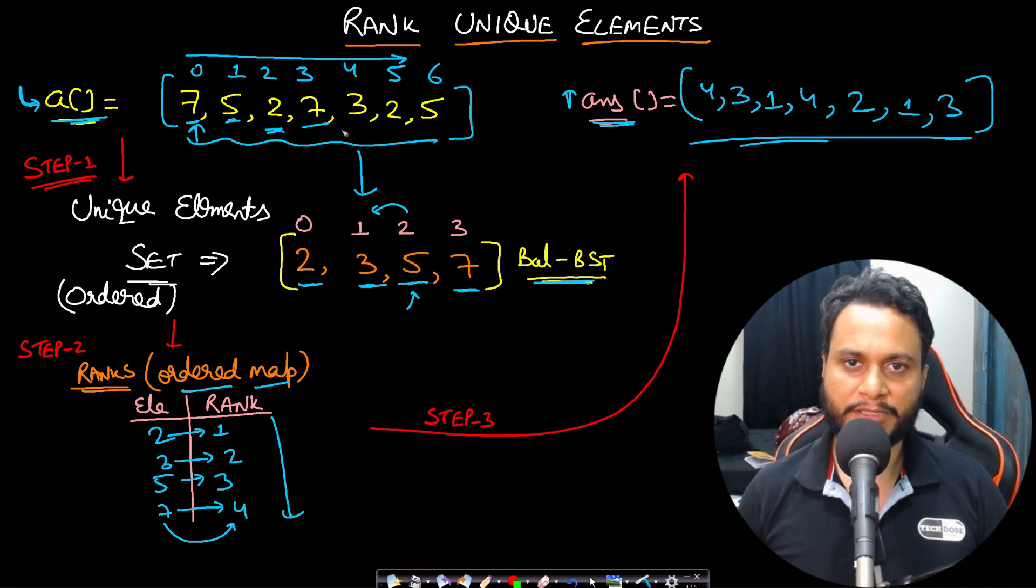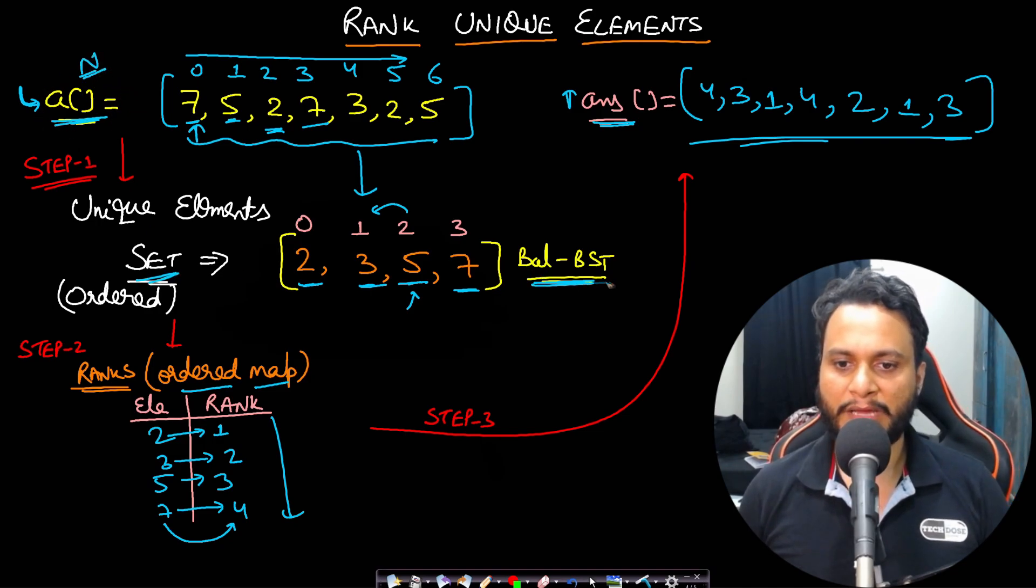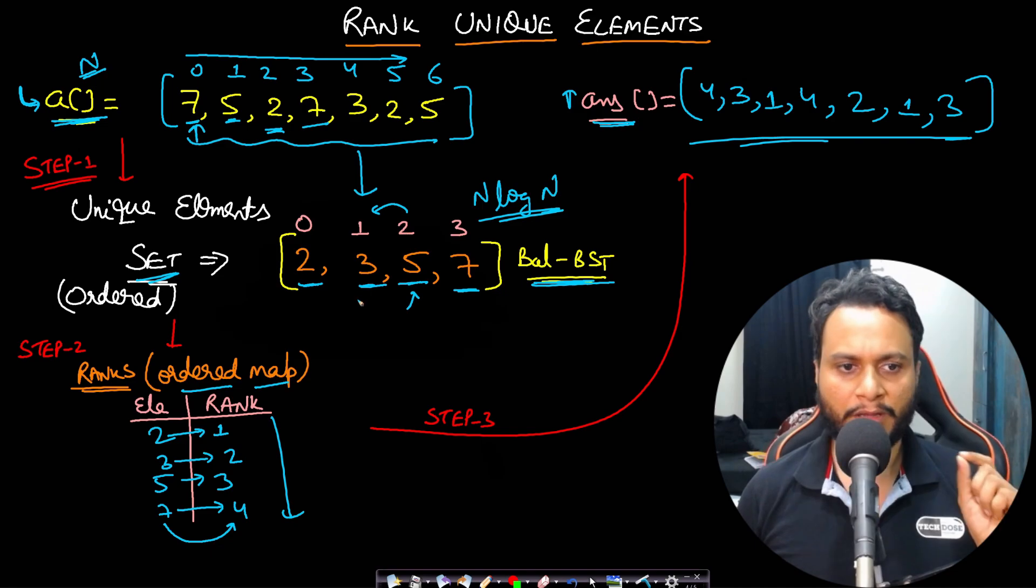Now what about the complexity of the algorithm? So if you talk about time complexity, then we are basically entering all the N elements of the array into a set and you know that it is a balanced BST. So each of the insertion will be log N and therefore for N insertions, this step will be N log N.